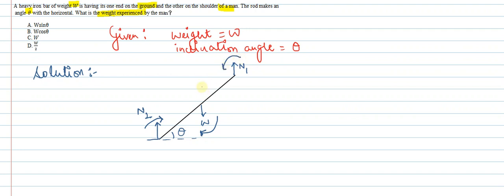We can write that N2 into zero plus W into L by 2 minus N1 into L equals to zero, which is equal to zero.